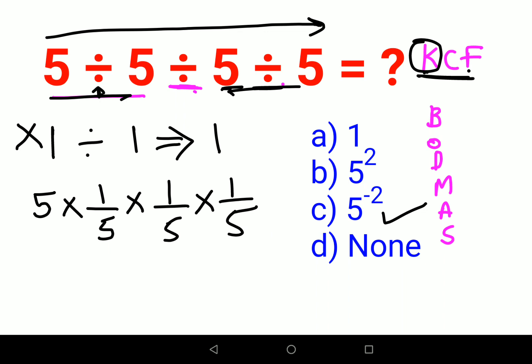So now what happens in this case is this 5 and this 5 is cancelling. Again we are left with what? 1 upon 25. That is nothing but what? 5 raised to minus 2.